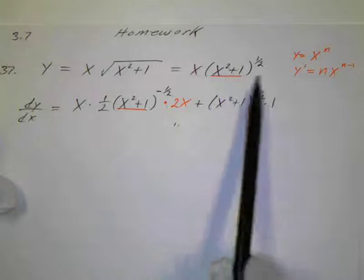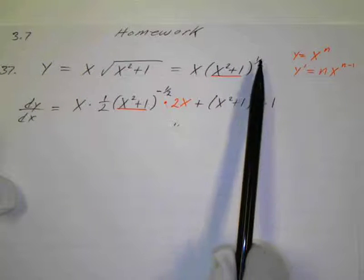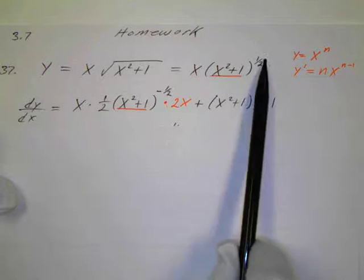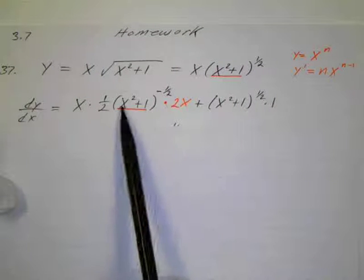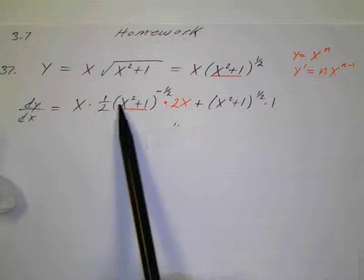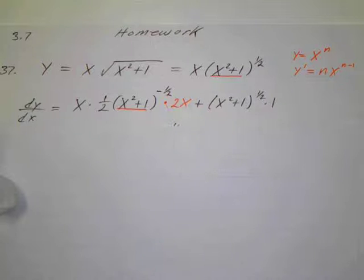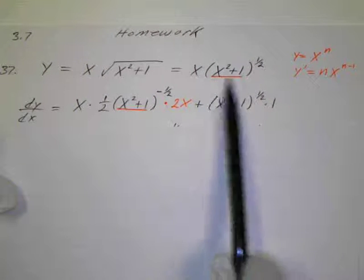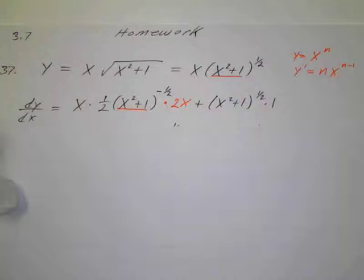The derivative of this is 1 half, this to the negative 1 half — I subtract 1 — and then times the derivative of the inside function, which is the derivative of x squared plus 1, which is just 2x. And then plus the second, which is this, times the derivative of the first, which is just 1.